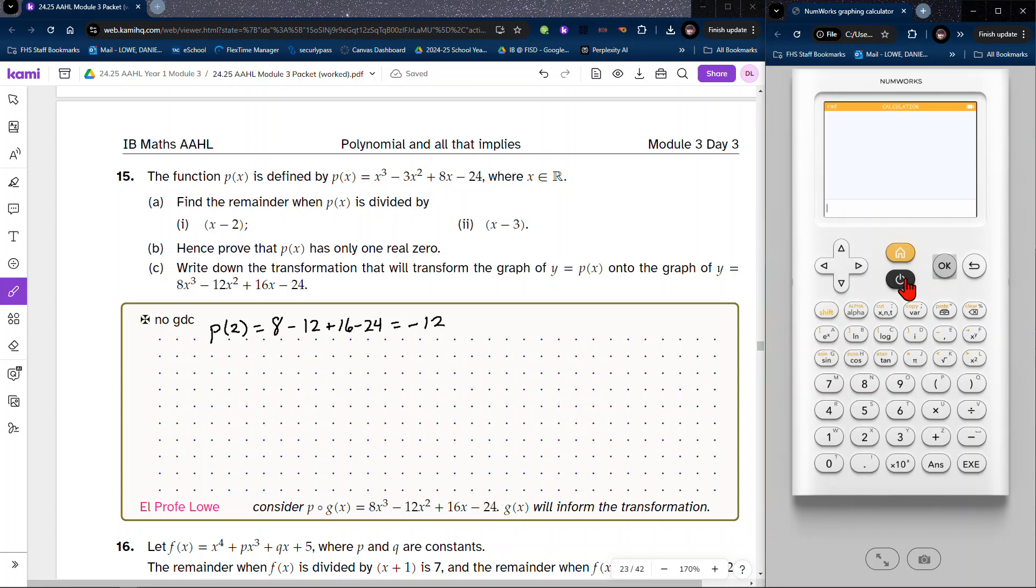Of course, if you wanted to you could use a calculator to determine that if you struggle with the arithmetic, which is fine, many of us do. So 8 minus 12 plus 16 minus 24, and we see that we have negative 12 for that value. But once again this is a non-calculator question, so it would be expected to do it without a calculator, but we can always check our work.